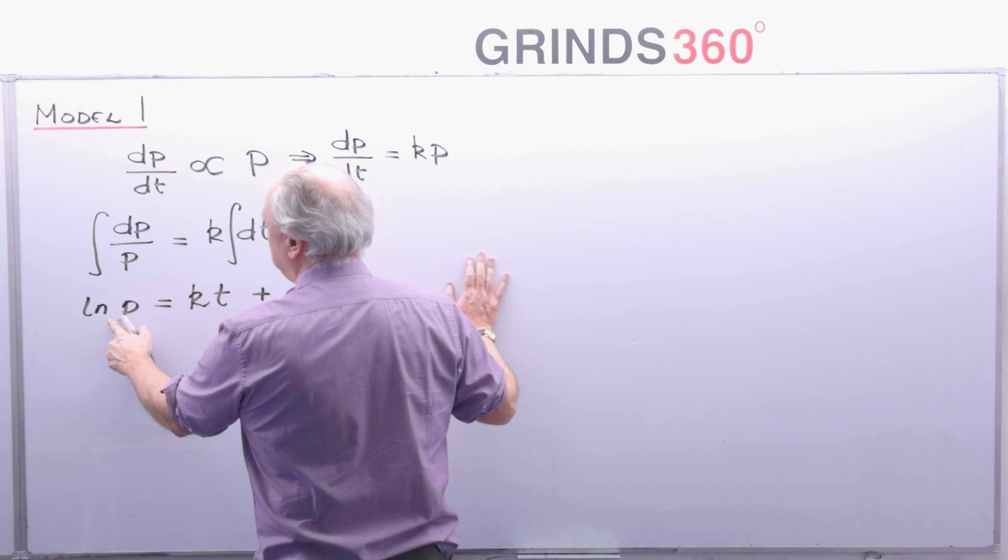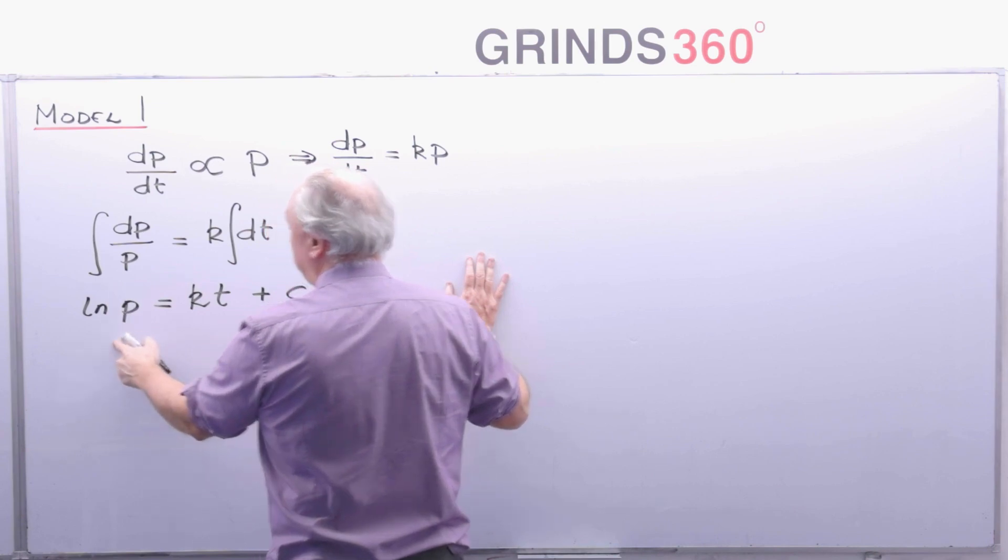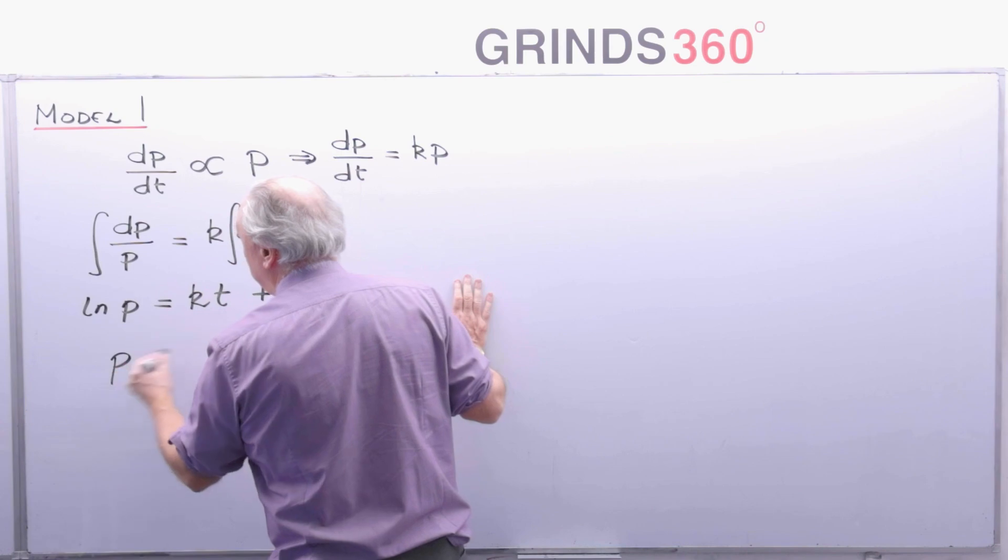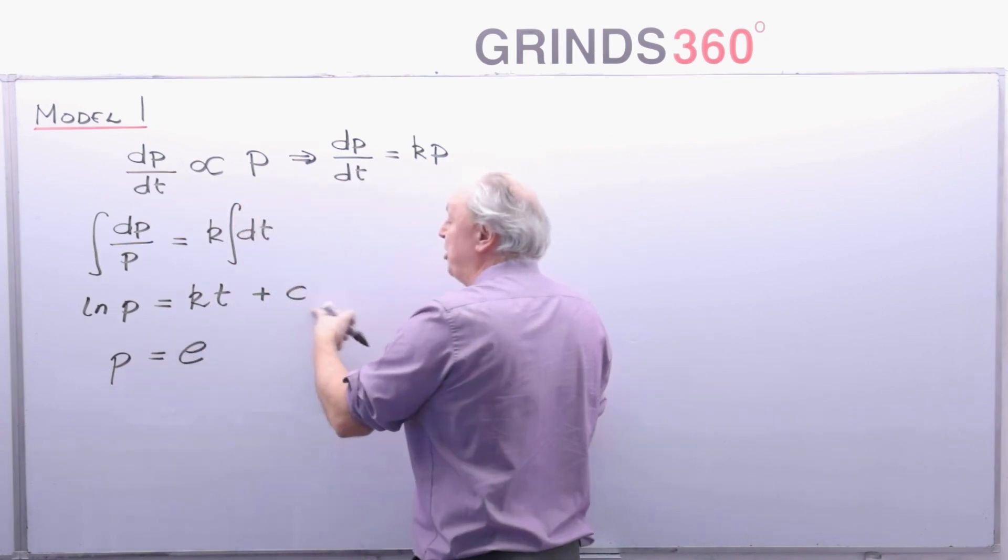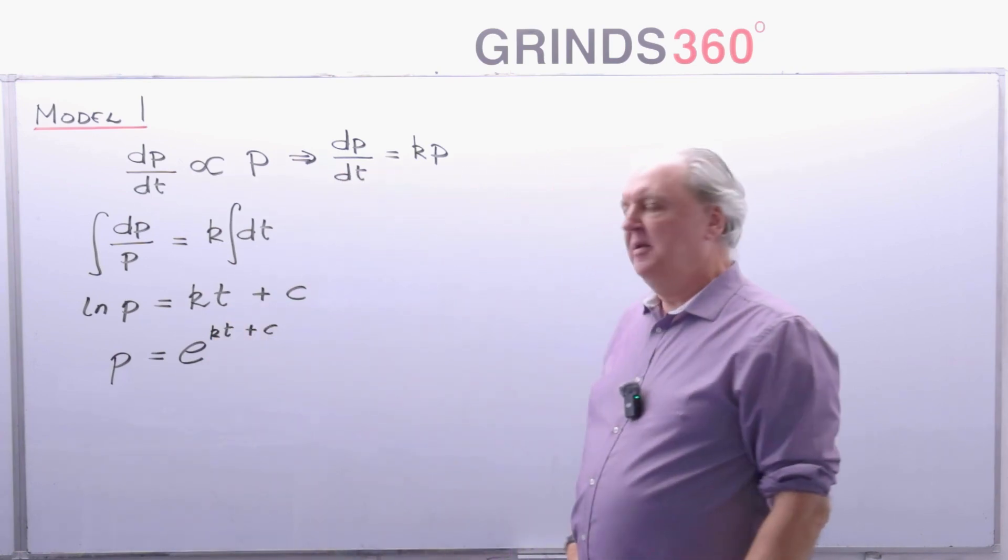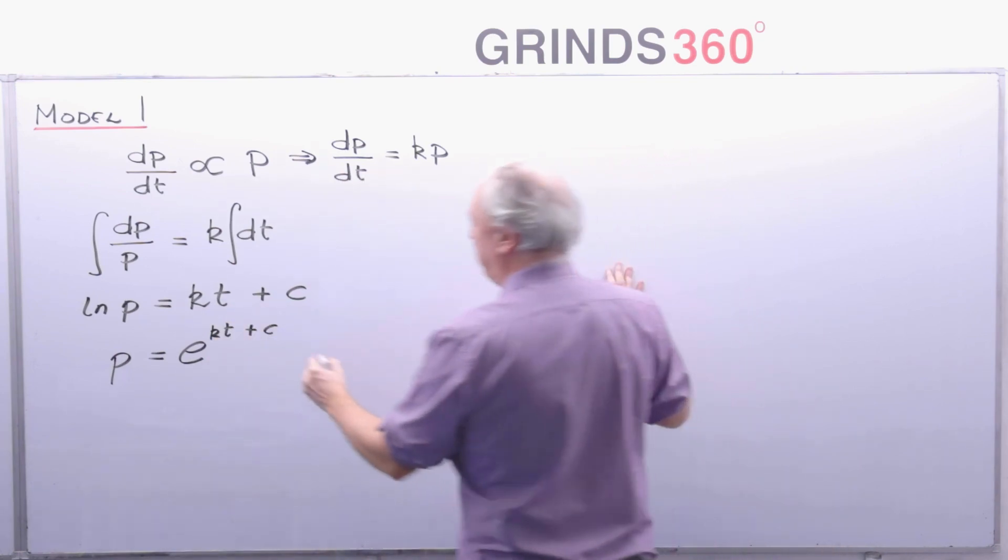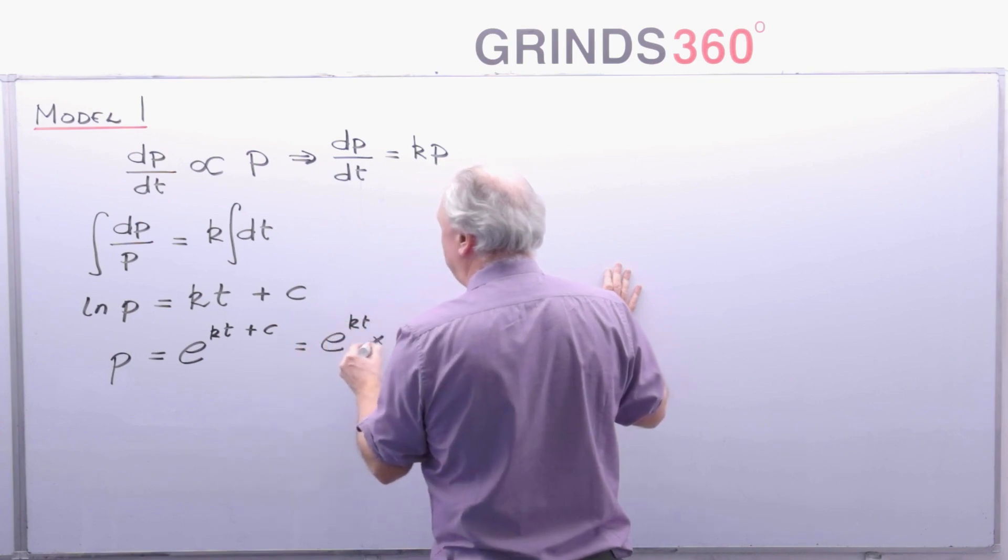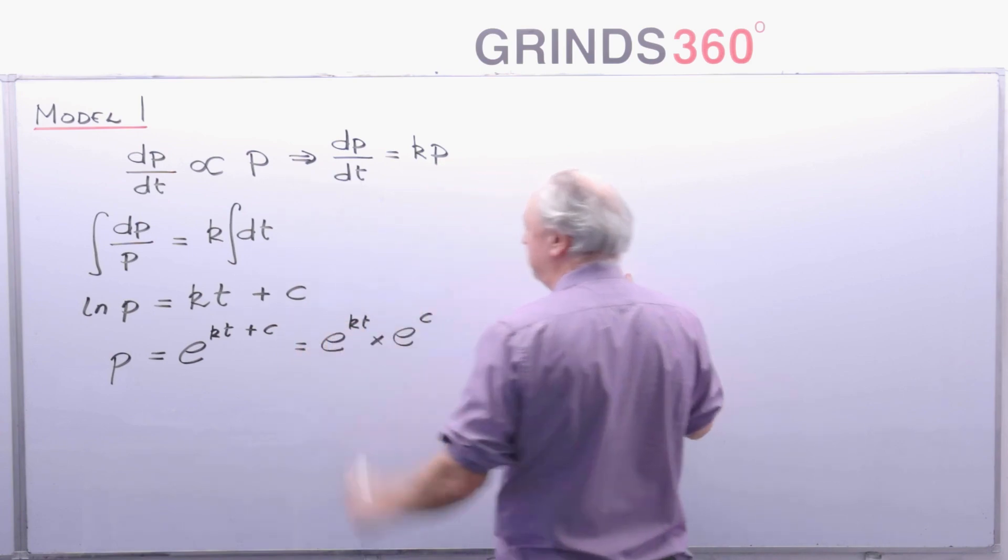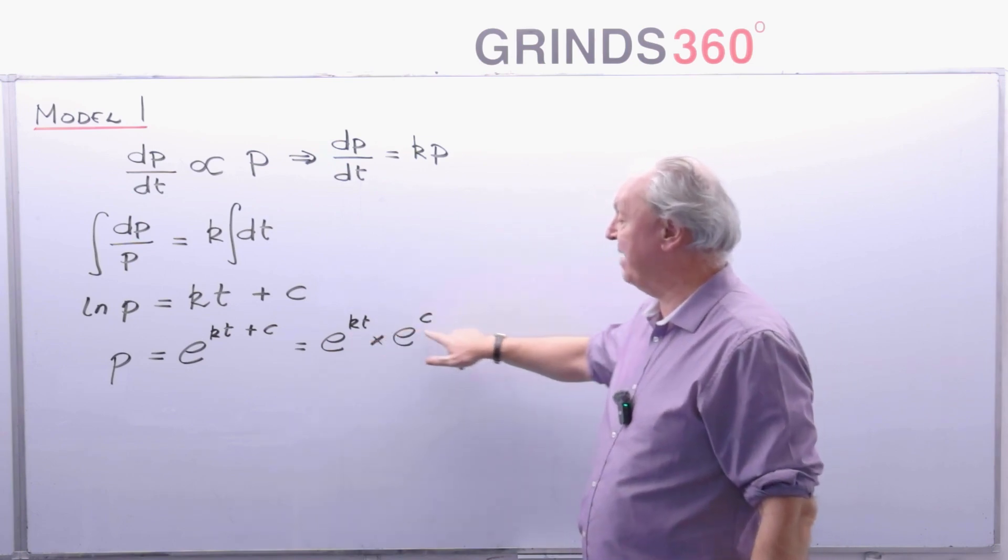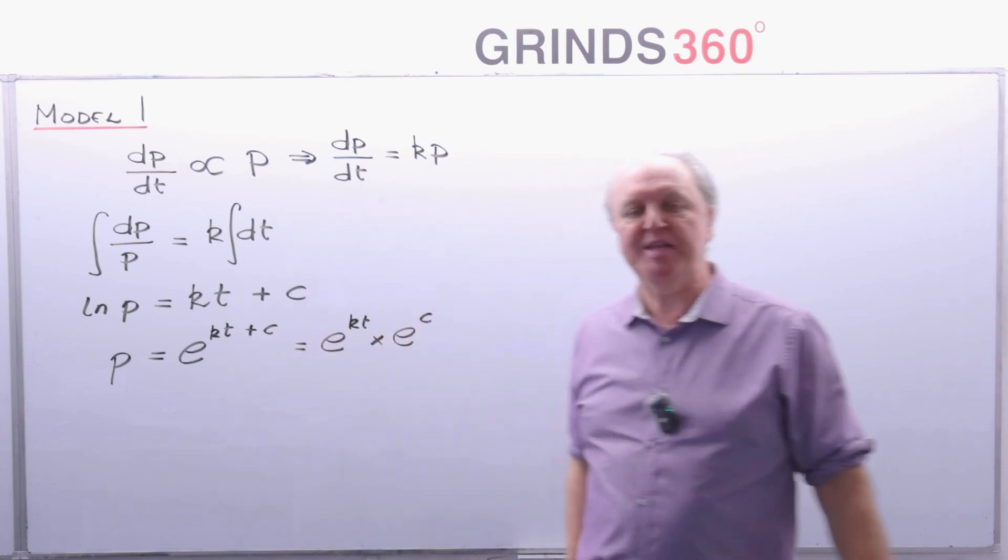Let me tidy that up a little bit more before I go further. Let me escape from logs. That's log to base e. Escape from logs by hooshing. So therefore p is equal to e to the power of kt plus c. Now I could break that down as e to the power of kt by e to the power of c. Because all you do when you have the same basis you add the powers to get that step back.